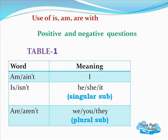Use of is/am/are in positive and negative questions: Am I a teacher? Aren't I a teacher, or Ain't I a teacher? Ain't is more appropriate. Is she a teacher? Isn't she a teacher? Are you teachers? Aren't you teachers? Also with different singular subjects: Is Seema a teacher? Are Seema and Asim teachers?